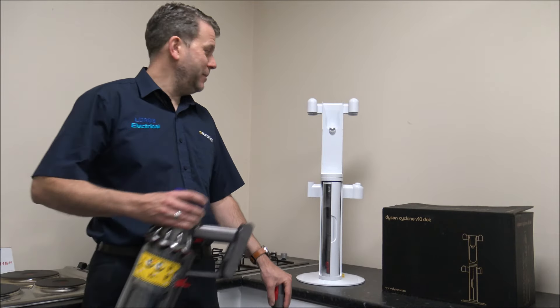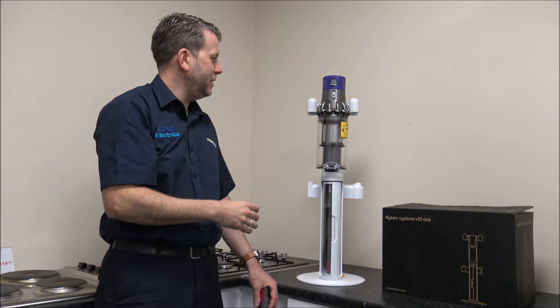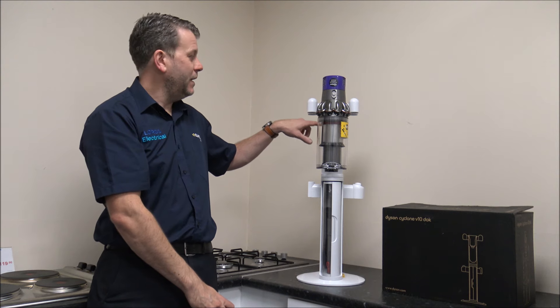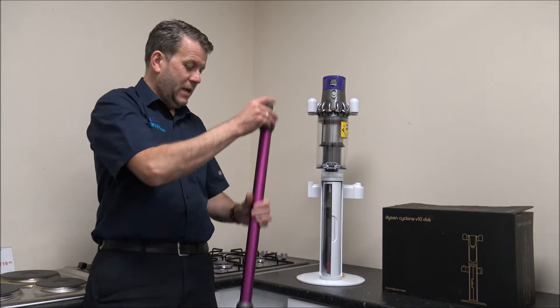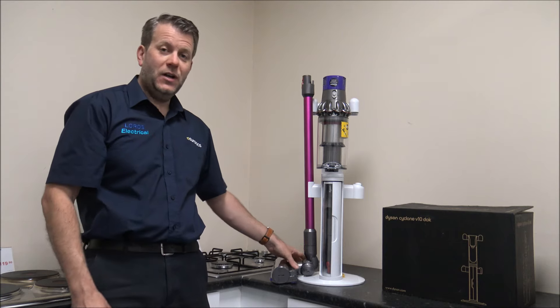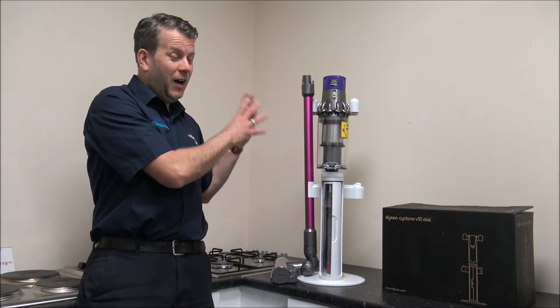So the idea is that when you've finished your vacuuming, the vacuum itself just slots in at the top. And as I mentioned earlier, because you've got the charging port there, then as soon as you put that in, the vacuum cleaner will start to charge. And as far as the main wand or the lance, that can just sit on the floor like that. So as far as a design, I think that's brilliant.